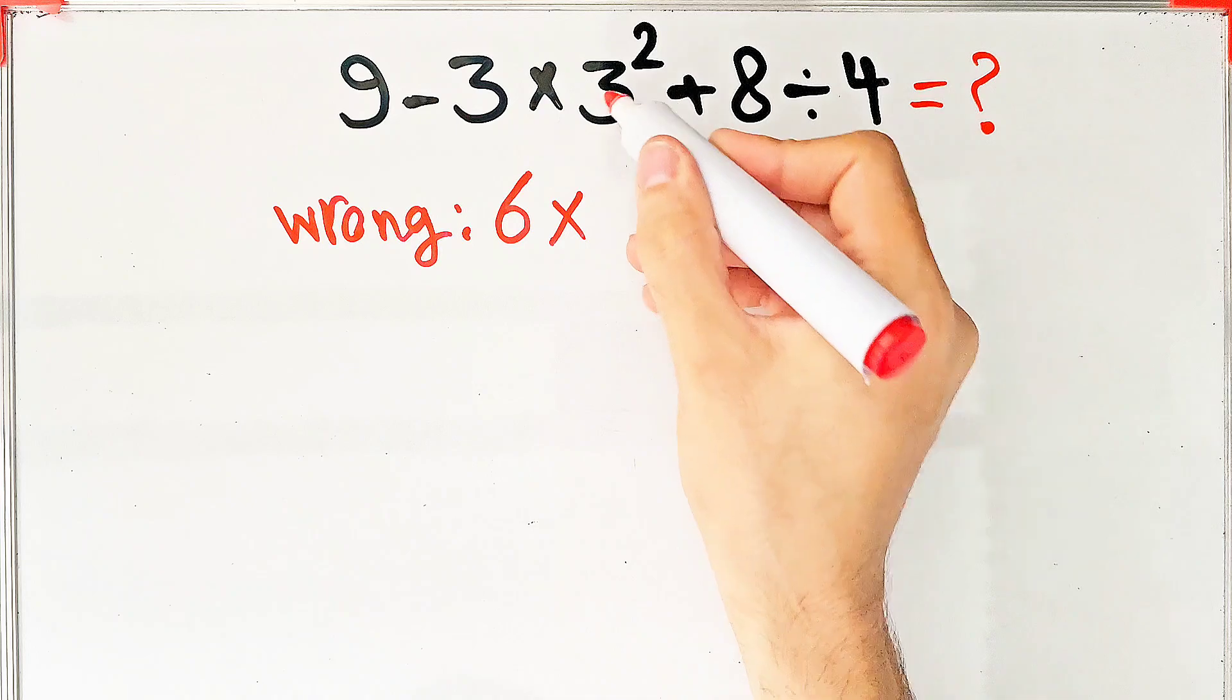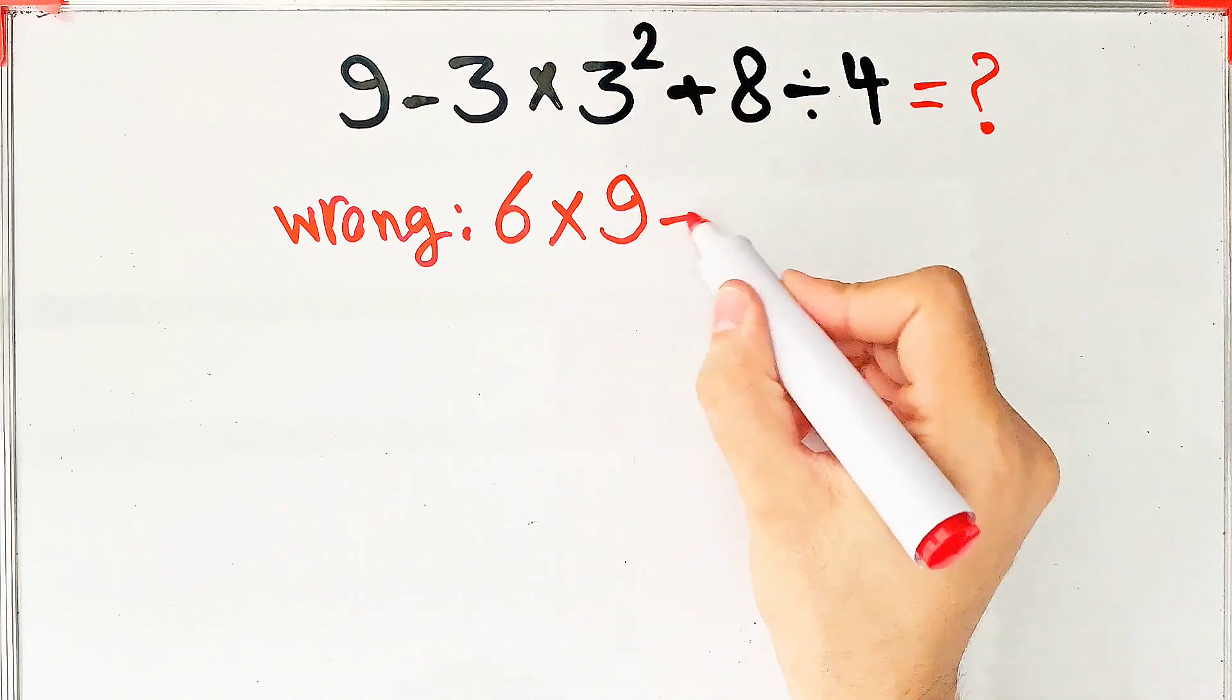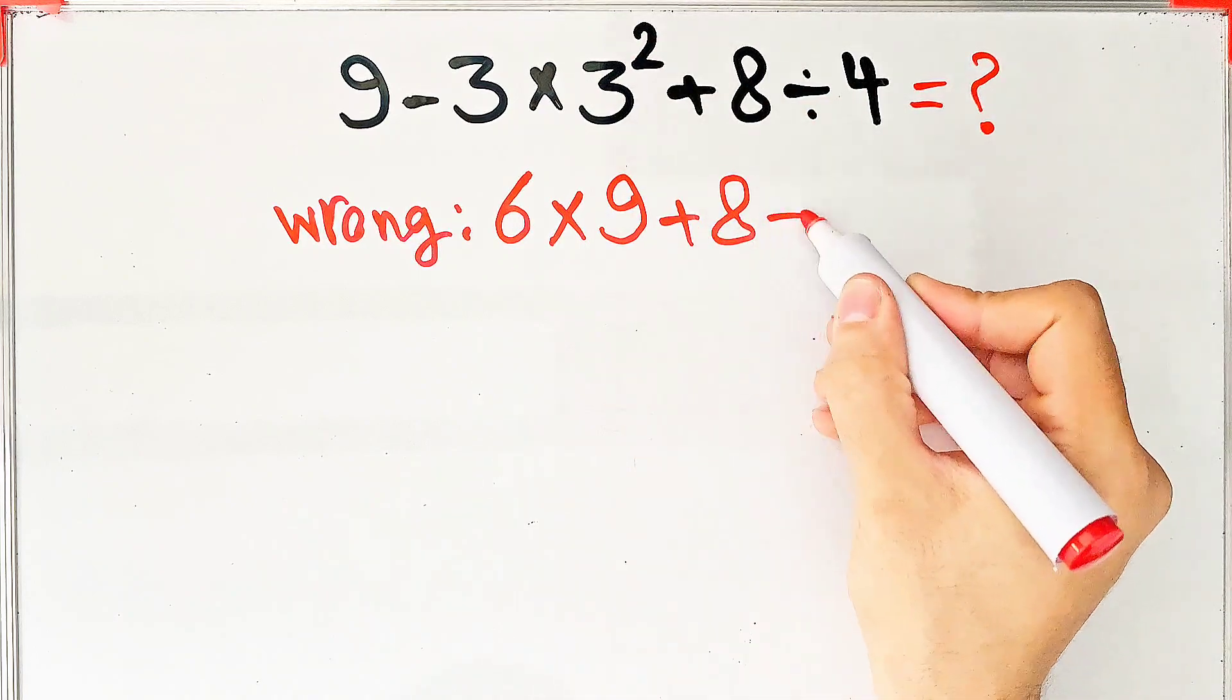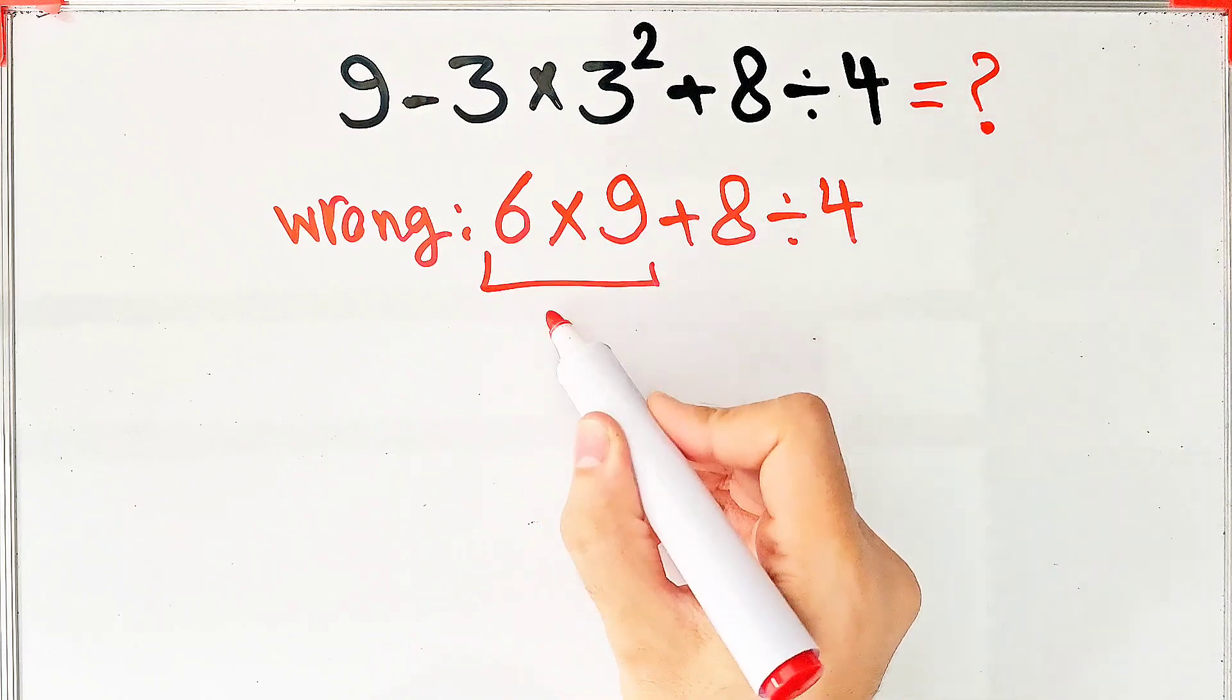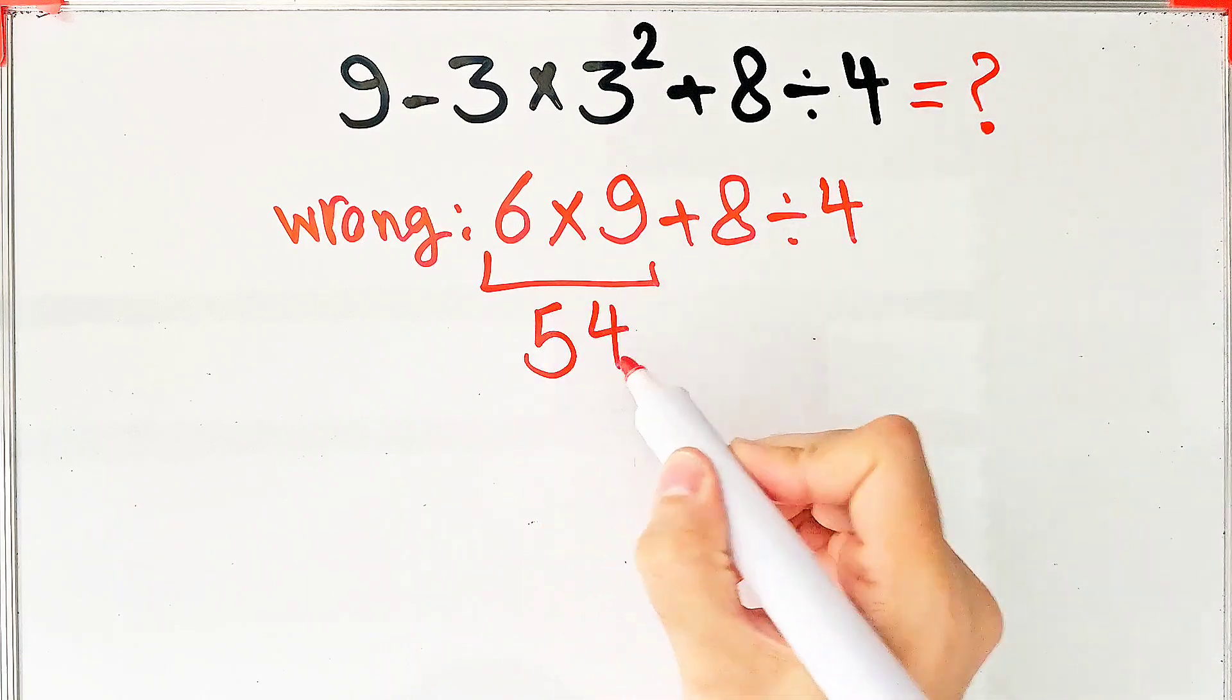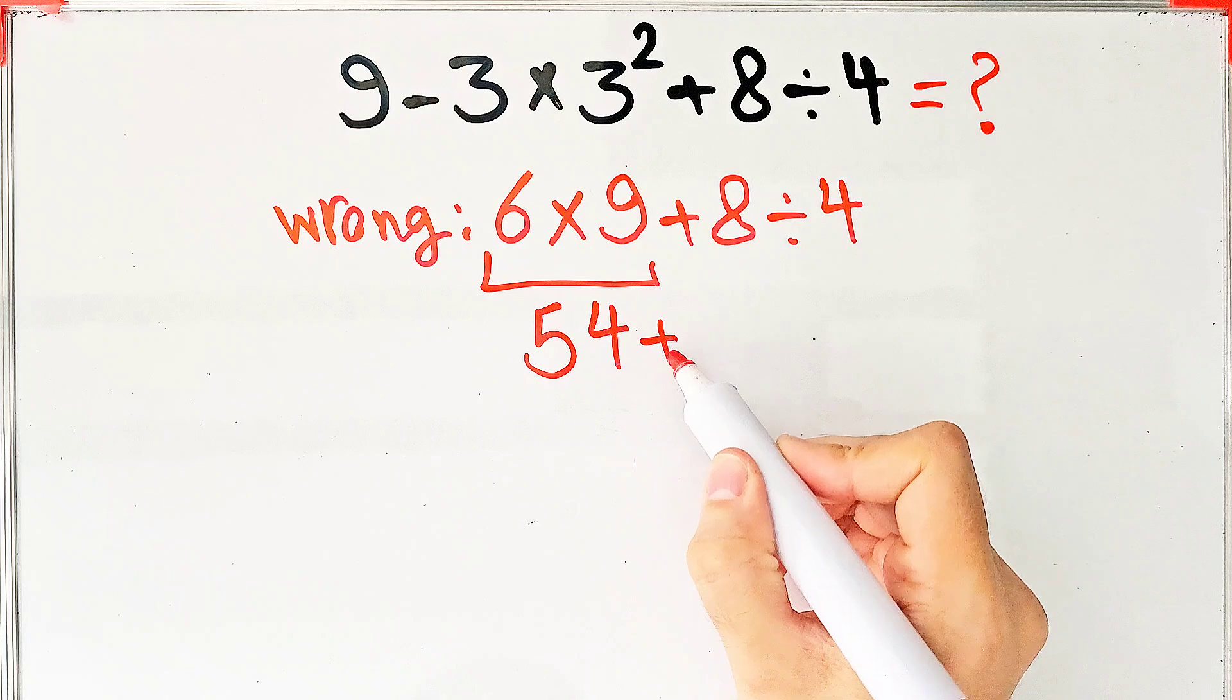9 minus 3 equals 6. 6 times 9 plus 8, then divided by 4. 6 times 9 equals 54. 54 plus 8, then divided by 4.